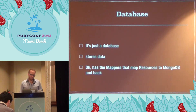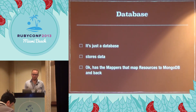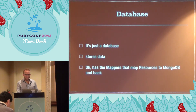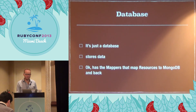The database is just a database — we use it to store data. There are mappers that map the resources to MongoDB and back, using the data mapper pattern. Perpetuity is a cool gem — right now it just works with Mongo but they're adding Postgres. I also looked into ROM RB, which is pretty cool but definitely not ready for use. I tried to keep model persistence out of the domain layer — not active record style. Data mapper is the pattern; it's in Patterns of Enterprise Architecture.